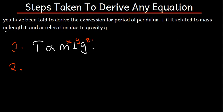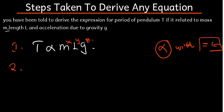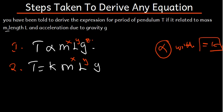Step 2: what we have to do is replace the proportionality symbol with equals K, where K is a constant. So where there is the proportionality symbol, we are going to replace it with equal to K. Meaning that T is going to be equal to K times M to the power X, times L to the power Y, times G to the power Z. This is going to be our general formula.